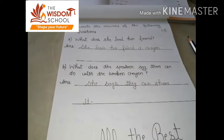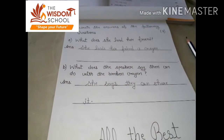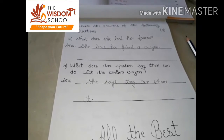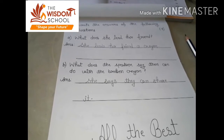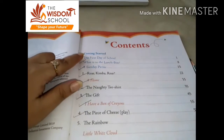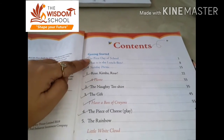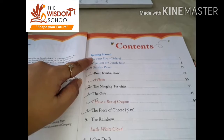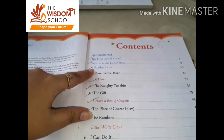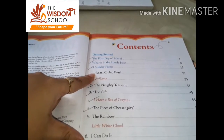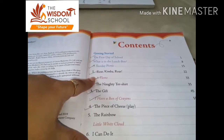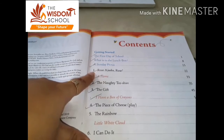So students, I hope you have understood the test paper. Now we will discuss about our syllabus, so listen carefully. Before the holidays, we have done the revision of all these: The First Day of School, What is in the Lunch Box, A Sunday Picnic, Roar Kimba Roar, and A Home. This revision we have done before the summer holidays.